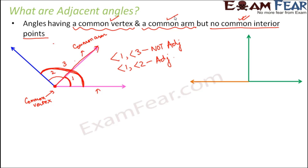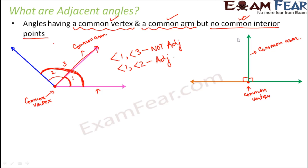Let's take one more example. These two angles are both 90 degrees — we know they are supplementary since their sum is 180 degrees. But are they adjacent? They have a common vertex, they have a common arm, and their interior regions are on opposite sides with no common interior points. Therefore, we can say that these two angles are also adjacent angles.